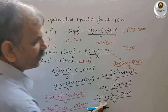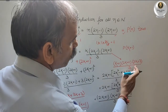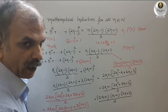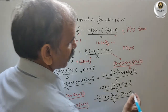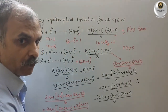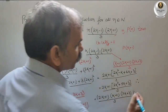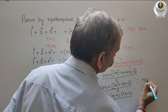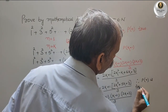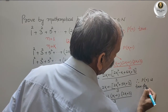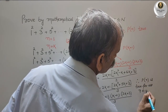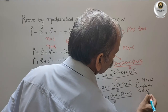LHS equals RHS, which matches the required form (k+1)(2k+1)(2k+3)/3. Therefore P(k+1) is true. Hence, by the principle of mathematical induction, P(n) is true for all n belonging to the natural numbers.